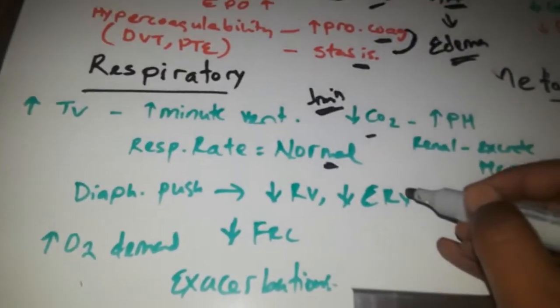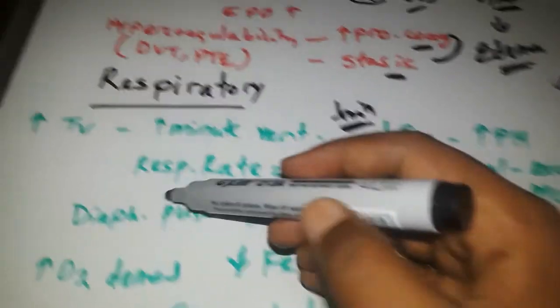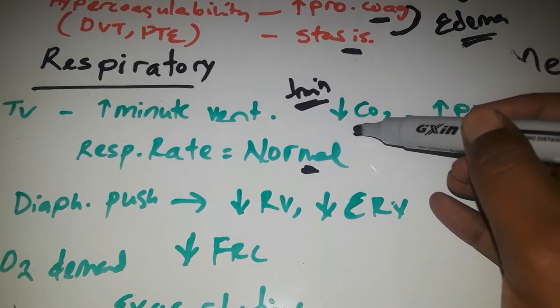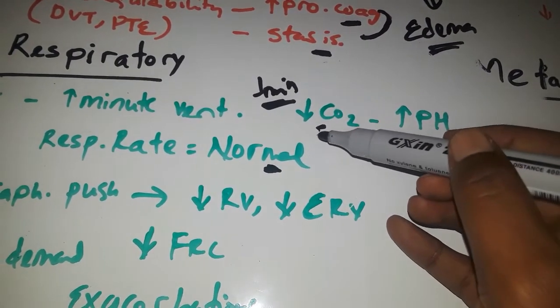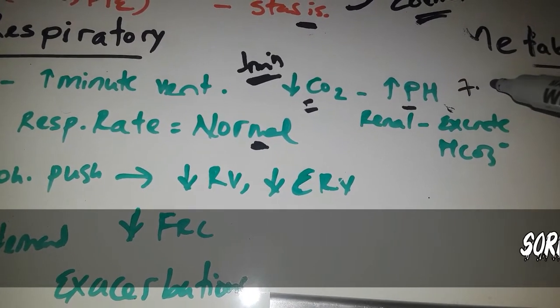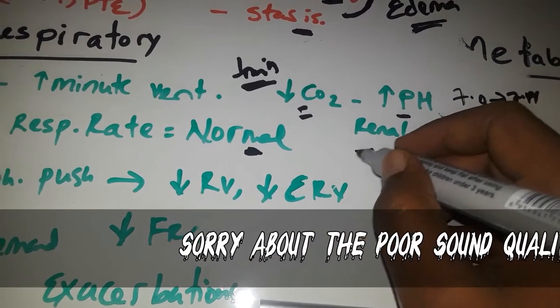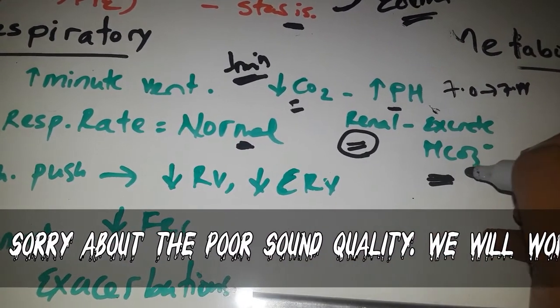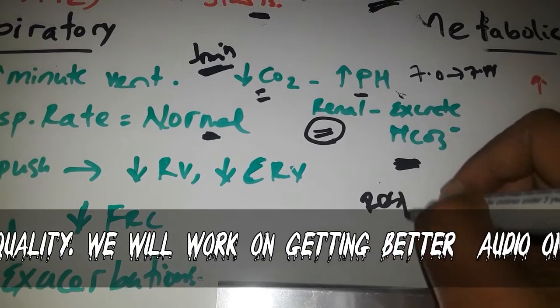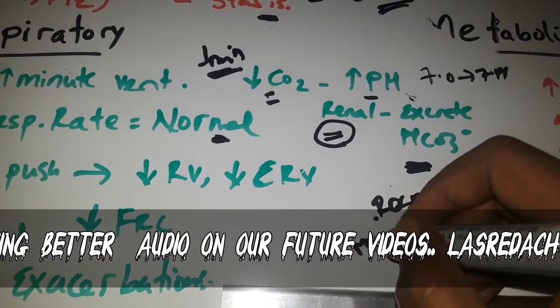On the respiratory system, progesterone mediates increased tidal volume and minute ventilation. Because of this increased ventilation, they have hypocapnia in pregnancy. Carbon dioxide in blood will be low, so the body pH will increase, causing respiratory alkalosis.